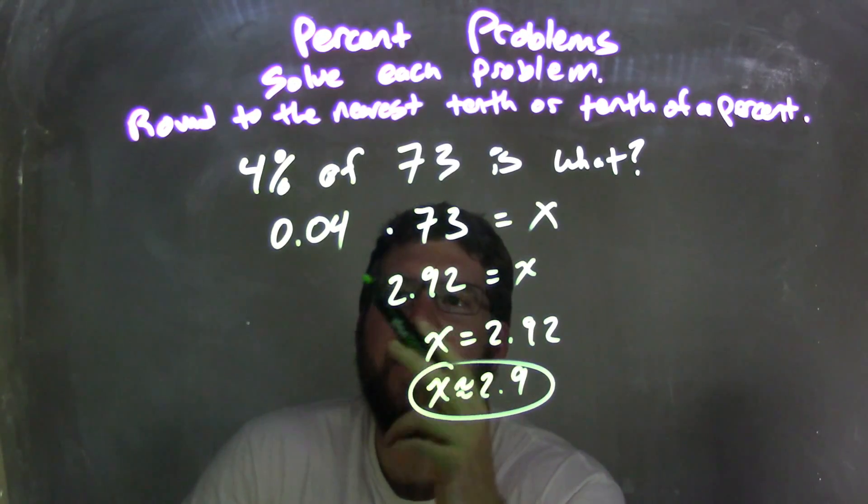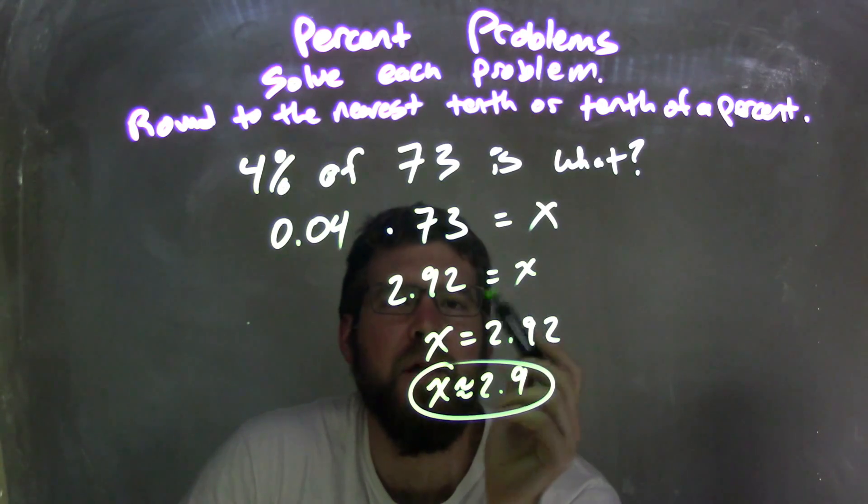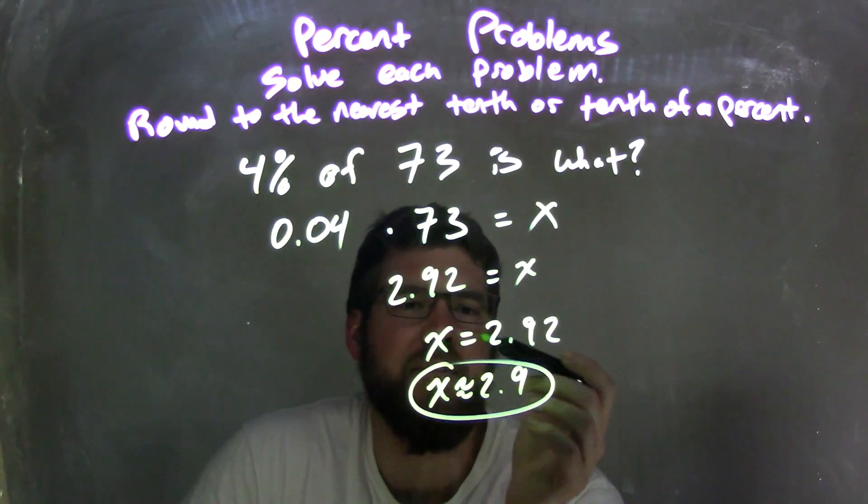So then I take the 0.04, times that by 73 to get 2.92. And that's equal to x. Then rearrange it. x comes first. So I have x equals 2.92.